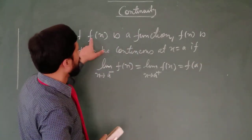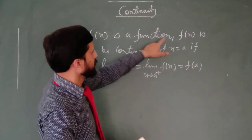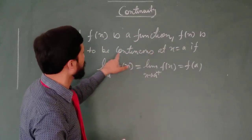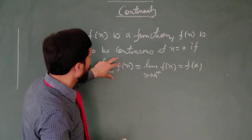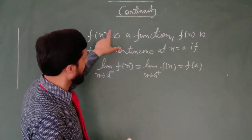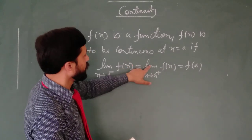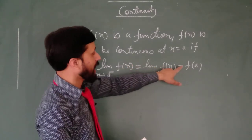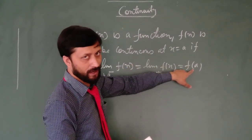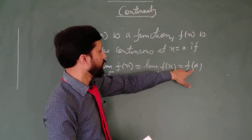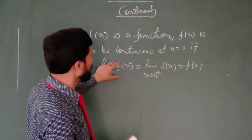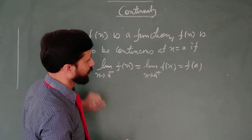Mathematically, let f(x) be a function and f(x) is said to be continuous at x equal to a if limit of the function from the left hand side for the point a is also equal to right hand limits as well as the functional value. If these all three values are equal then we can say that the given function is continuous.